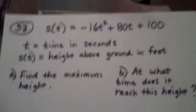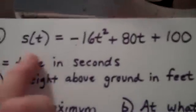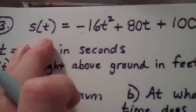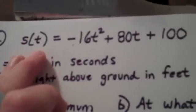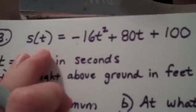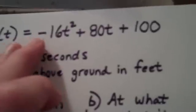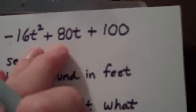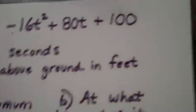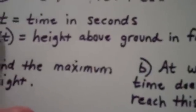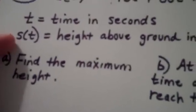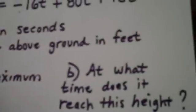Okay, ladies and gentlemen. Problem number 33. I have a position function S of t, which measures how high a particular object is above the ground in feet at the end of t seconds. S of t equals negative 16t squared plus 80t plus 100. T is time in seconds, and S of t is the height above the ground in feet.